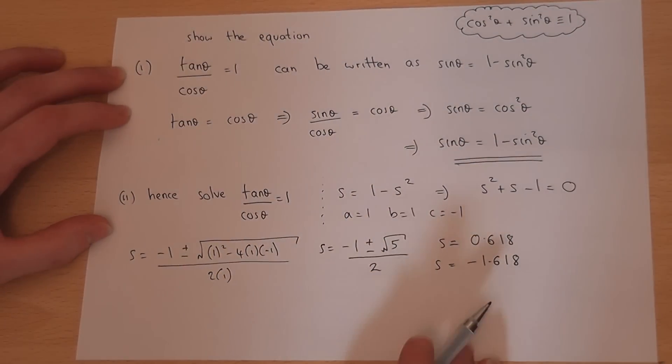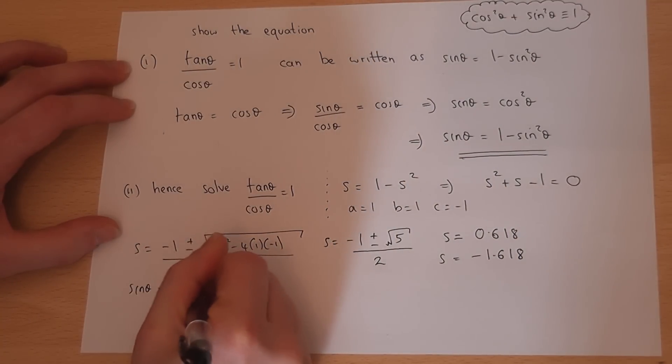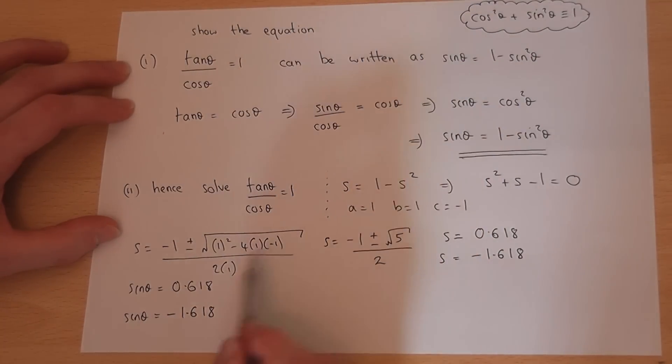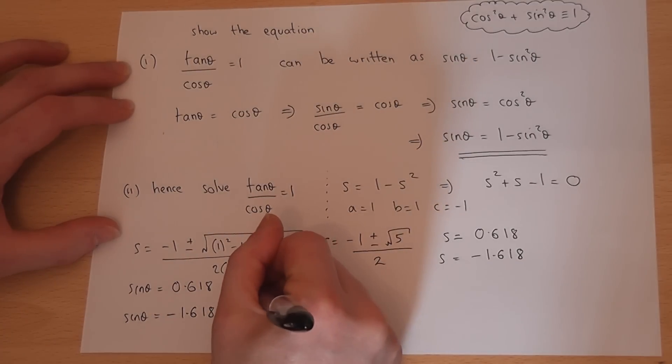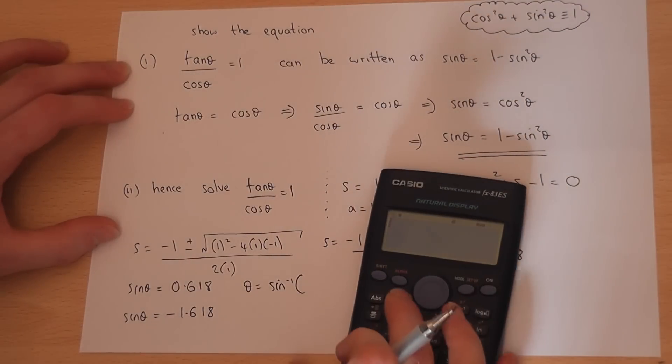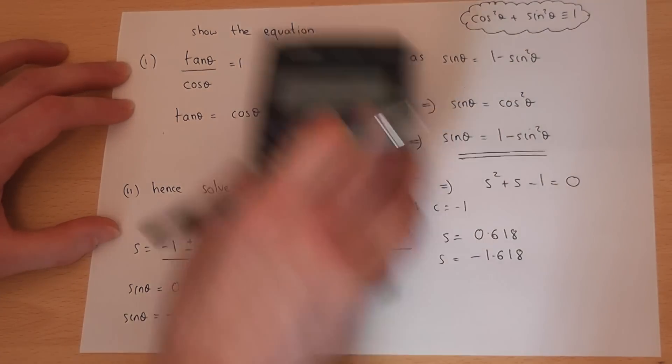So these are my two values for sine. So either sine theta is 0.618 or sine theta equals minus 1.618. However, the question is to solve to find theta, not what sine theta is. So to find theta, I must inverse sine that value. So theta will equal the inverse sine of 0.618, and I get the angle of 38.2 degrees.